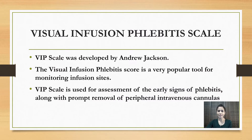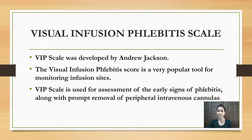Visual Infusion Phlebitis scale was developed by Andrew Jackson. The Visual Infusion Phlebitis score is a very popular tool for monitoring infusion sites. VIP scale is used for assessment of the early signs of phlebitis along with prompt removal of peripheral intravenous cannulas. If you insert an IV cannula for a patient, the duration of an IV cannula is 72 hours. The VIP scale will help you to identify the early signs of phlebitis and tell you exactly when you need to remove the cannula.